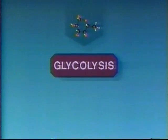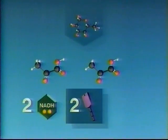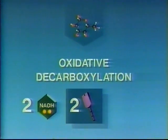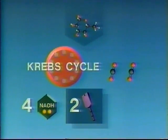Let's return to the original molecule of glucose and review what became of it. Glycolysis generated two molecules of pyruvate, two ATPs, and two NADHs. The two pyruvates entered oxidative decarboxylation and produced two acetyl-CoA molecules, two carbon dioxide molecules, and two more NADH molecules. Since two acetyl-CoAs are engaged in the Krebs cycle, think of the cycle turning twice.